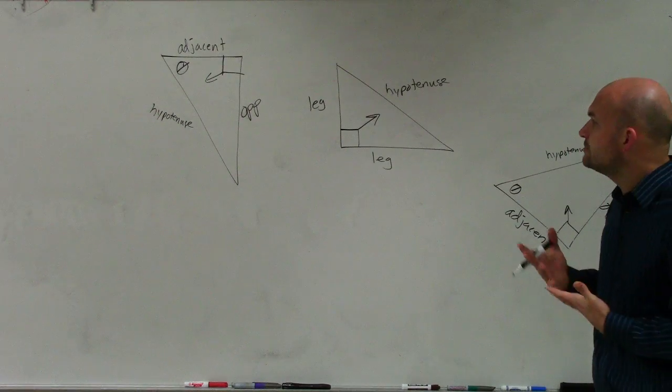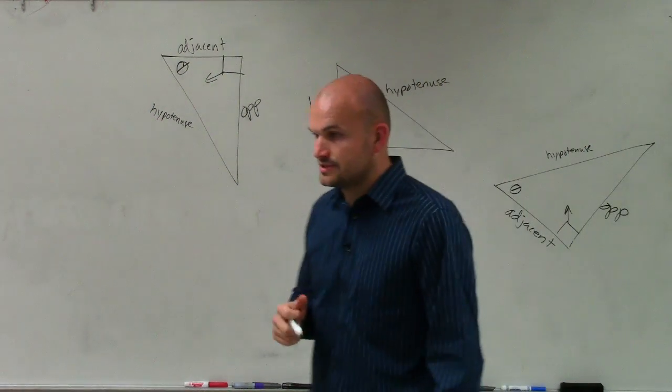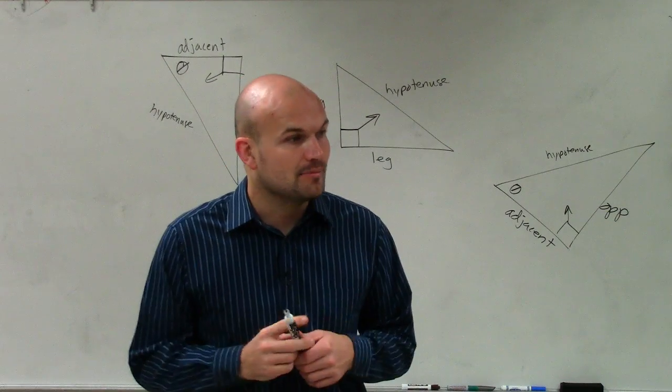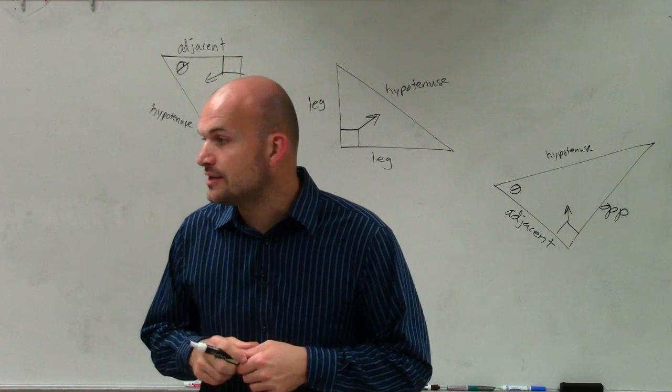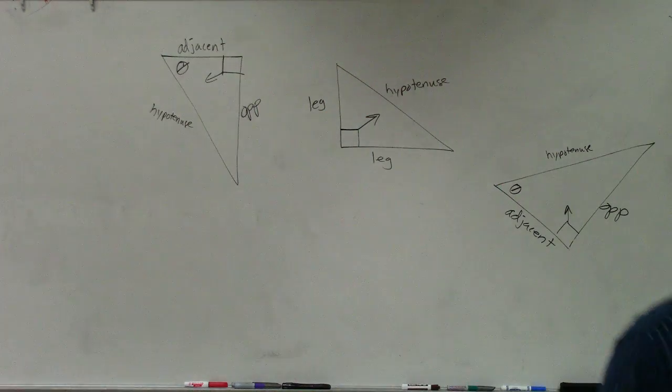So when we're going to be using these ratios, you're going to want to make sure you label your triangle first. Always label your triangle adjacent, hypotenuse, and opposite. So that's what we're going to do for right now.